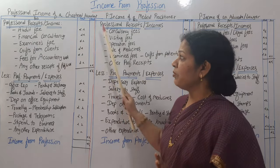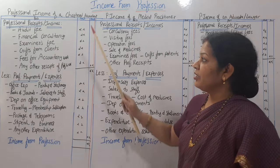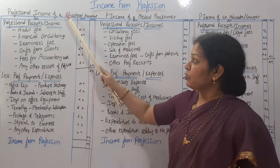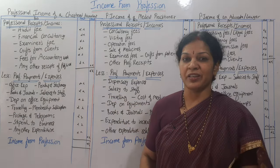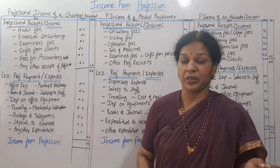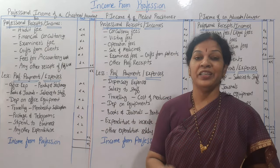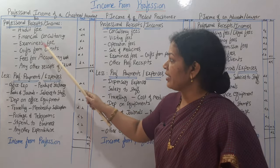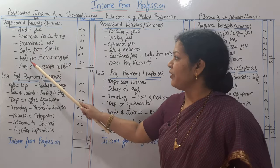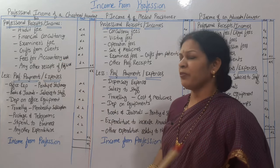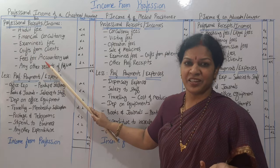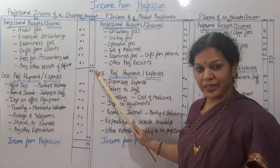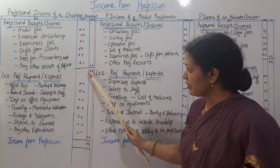Let's talk about the professional income of a chartered accountant. The proforma has particulars, an inner amount column, and an outer amount column. First we take professional receipts or income — what comes under the income of a chartered accountant: audit fee, financial consultancy, examiner's fee, gifts from clients, fees for accountancy work, and any other receipts of professional work. These are totaled in the inner column and written in the outer column.